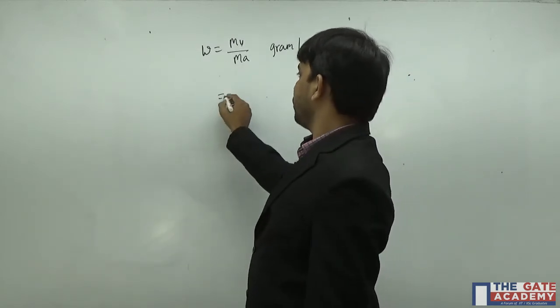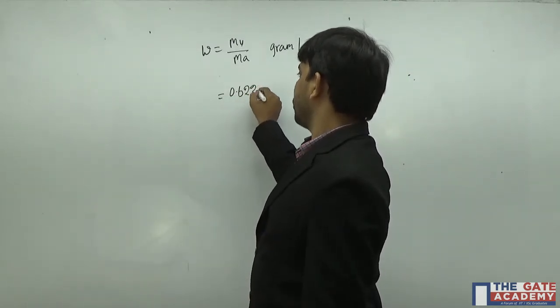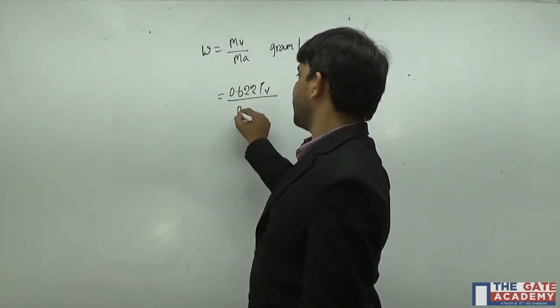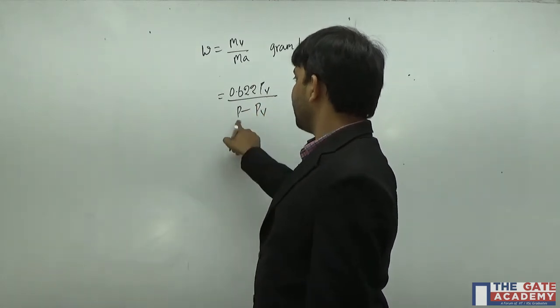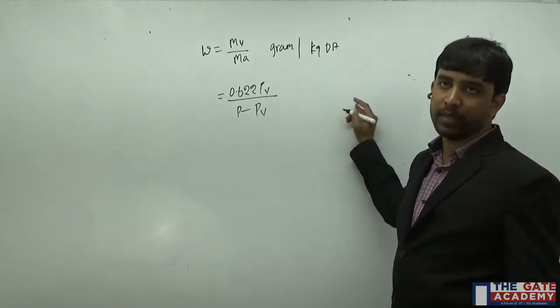If you simplify this one, we will be getting 0.622 PV divided by P minus PV, where P is total pressure and PV is your partial pressure of water vapor at the given sample.